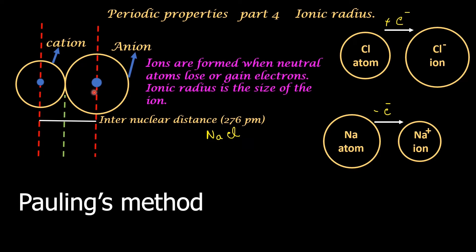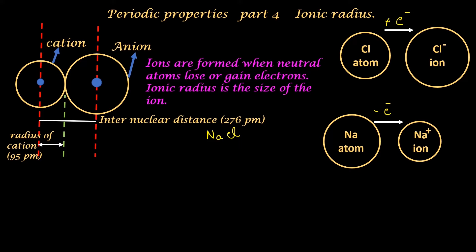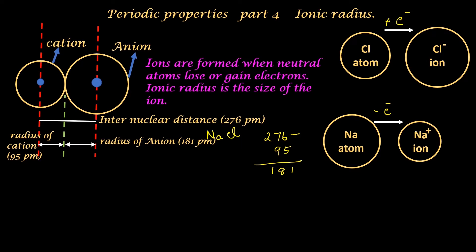Pauling's method is the widely accepted method. By applying this method, it was found that the sodium ion has an ionic radius of 95 picometers — that is, the distance from the center of the nucleus of the cation to the boundary of the electron cloud up to which the nuclear effect is experienced. Now we have two values: the internuclear distance of 276 picometers and the ionic radius of sodium ion at 95 picometers. So the radius of chloride ion equals 276 minus 95, which is 181 picometers.